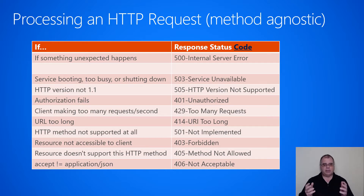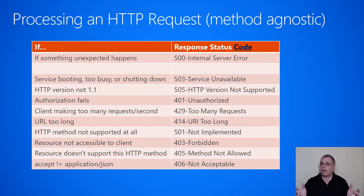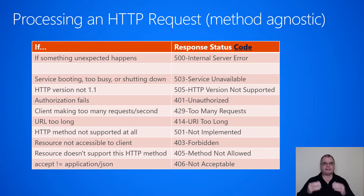Then you would check the HTTP version, then check to see if authorization fails or not. I do want to call out authorization: once you have authenticated the client, you know who they are, so anything that happens further down in the table you can attribute to somebody. For example, the next thing is checking to see if the client is making too many requests per second — and you only know which client after authorization has occurred. That's why we check authorization pretty early on. Knowing who the client is is important for a lot of the remaining operations.